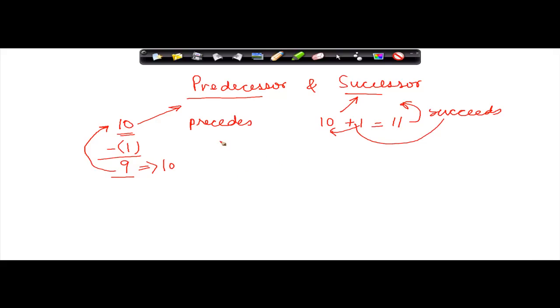Similarly, you can get any number's predecessor and successor. Let us say we have a number 89. To get a predecessor of 89, I subtract 1 from it and I get 88.